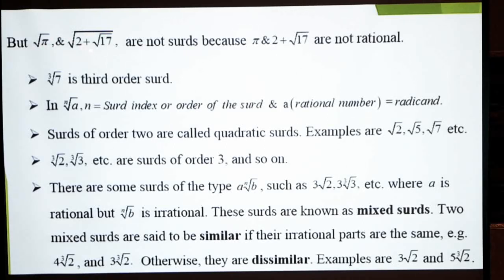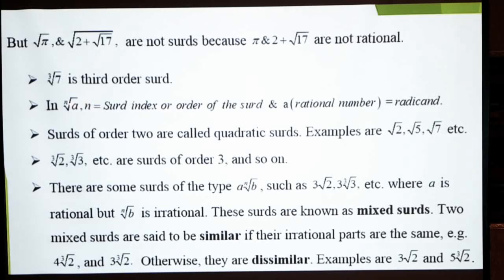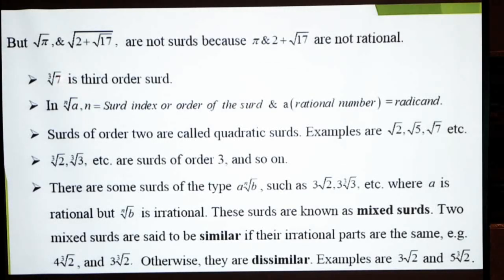اگر radicand میں irrational number موجود ہے تو وہ surd نہیں ہوگا۔ Cube root of 7 is a third-order surd — اس کو third-order surd کہتے ہیں کیونکہ یہاں پہ n کی جگہ 3 ہے۔ تو یہ index جو ہوتا ہے وہ اصل میں order ہوتا ہے کسی بھی surd کا۔ This n is called the index or order of the surd and a is a rational number — یہ radicand کہلاتا ہے۔ اس expression میں 7 radicand ہے اور 3 order of the surd بھی ہے اور index of the surd بھی ہے۔